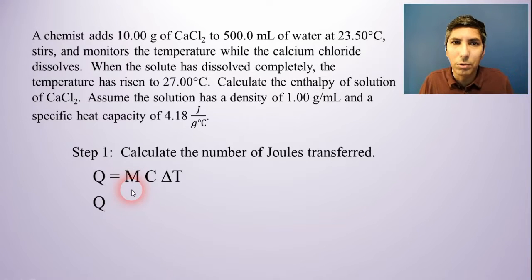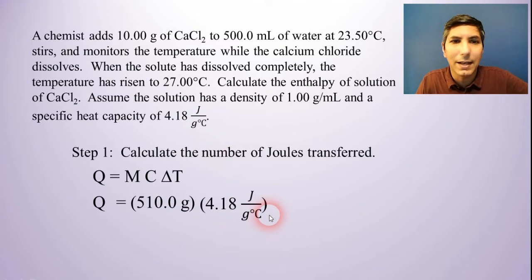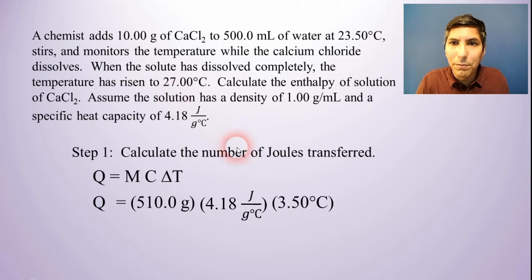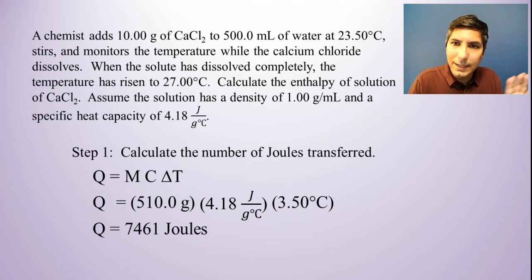Now m is the mass of this solution total. The total mass is the 10 grams of your calcium chloride plus your 500 milliliters or grams of water. That's the density. So the total mass of this solution is 510.0 grams. We have to add those together to get the mass. The c is our specific heat. The problem tells us the solution has a specific heat of 4.18 joules per gram degree Celsius. Delta T, the solution rises from 23.50 degrees up to 27.00 degrees. That's a simple subtraction and it's 3.50 degrees Celsius, which is by how many degrees the temperature rose. When you multiply these together, we get 7461 joules.